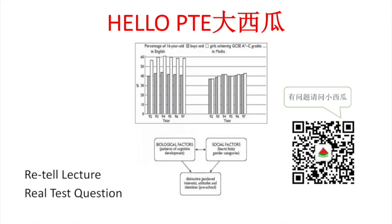It shows that in English, girls consistently outperform boys over a period of six years.